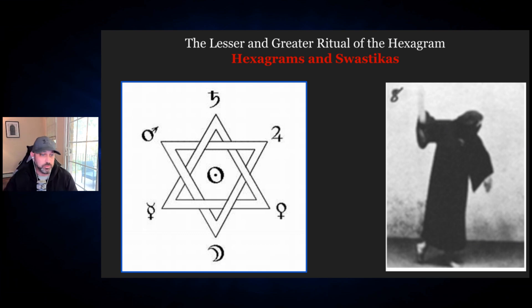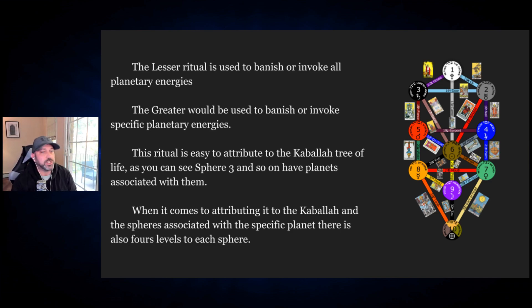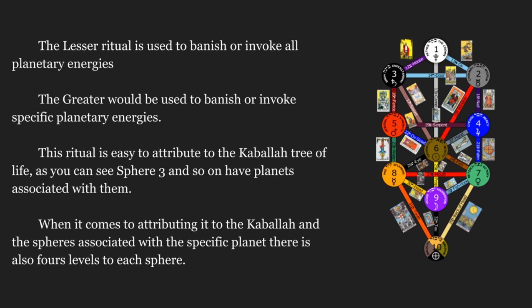The lesser ritual is used to banish or invoke all planetary energies. The greater ritual is used to banish or invoke specific planetary energies — it gets much more specific. This ritual is very easy to attribute to the Kabbalah and the Tree of Life. When you start from sphere three and so on, you have planets associated with it. Each sphere has at least four other levels or depths of understanding associated with it.